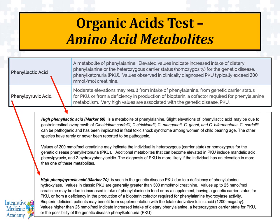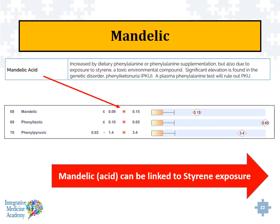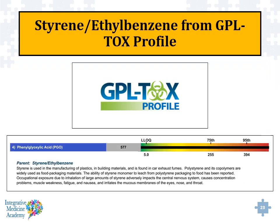The organic acid test has markers that help to indicate potential problems in this biochemical system. Another interesting chemical found on the amino acid metabolite section on the last page of the OAT is mandelic acid. Mandelic can actually be high for the same reasons that phenyllactic and phenylpyruvic can be high. However, one of the things that can also lead to increases of mandelic is styrene exposure. Styrene is found in plastic manufacturing and car exhaust fumes. Styrofoam exposure can also lead to a styrene elevation on a Great Plains test called the GPL-TOX profile, which looks at environmental chemicals. The organic acid test then allows us to expand our horizons and see how it can link up to other types of testing.